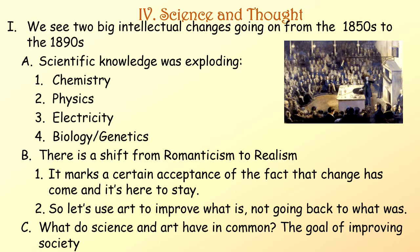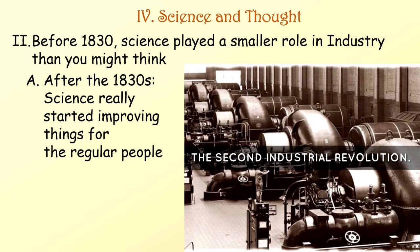What do science and art have in common? They have the goal of improving society. Before 1830, science played a smaller role in industry than you might think. After the 1830s, science really started improving things for regular people. This was the Second Industrial Revolution.